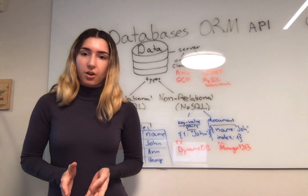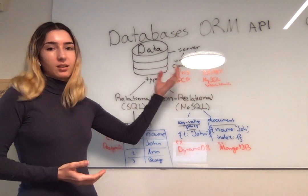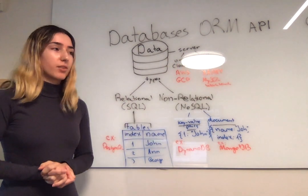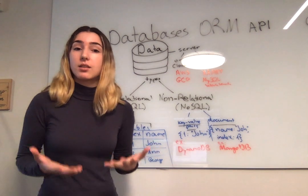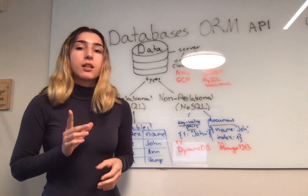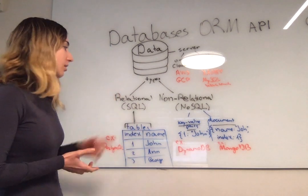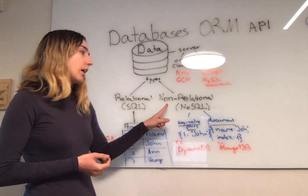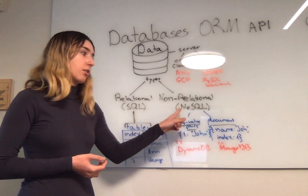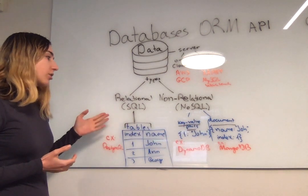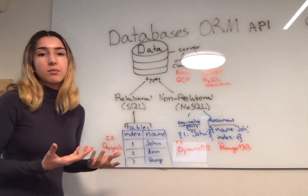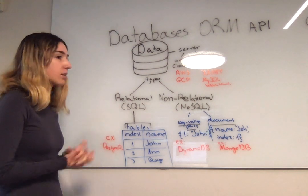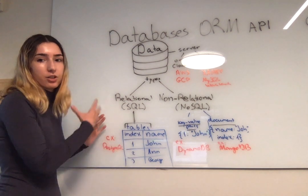Starting off with our first topic: databases. The first thing I want to mention about databases is that this is where we store our data essentially. As you might have heard, there are two kinds of databases: we have a relational database, which is also known as a SQL database, and we have a non-relational database, also known as a NoSQL database. So let's take a look at relational databases.